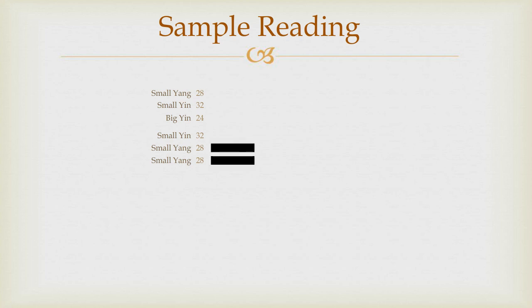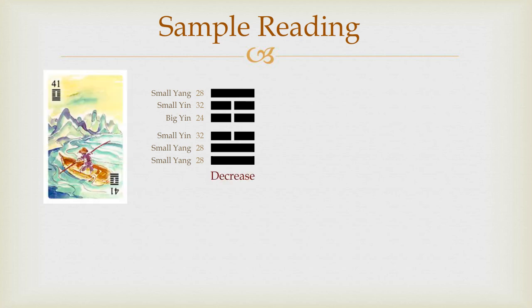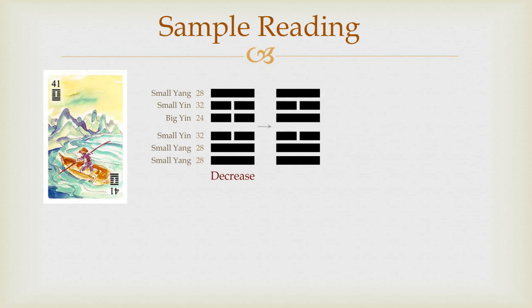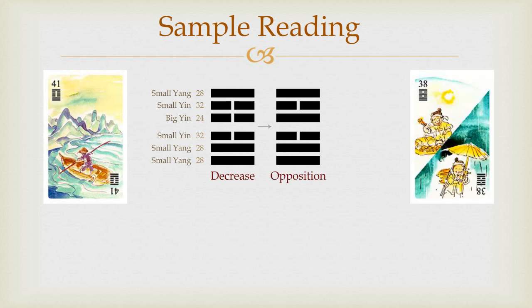Therefore, if you start from below and stack up the lines as indicated before, you will get the first hexagram of number 41, Decrease. If you change the yin and yang of the big lines, you will end up with the second hexagram of number 38, Opposition.